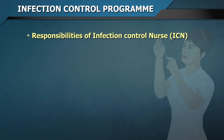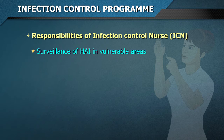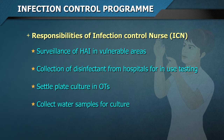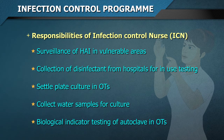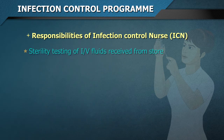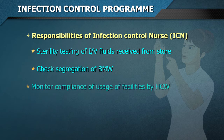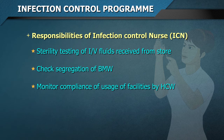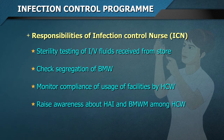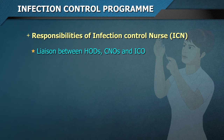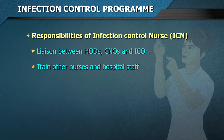Responsibilities of the infection control nurse (ICN): 1. Surveillance of HAI in vulnerable areas. 2. Collection of disinfectant from hospitals for in-use testing. 3. Settle plate culture in OTs. 4. Collect water samples for culture. 5. Biological indicator testing of autoclave and OTs. 6. Sterility testing of IV fluids received from store. 7. Check segregation of biomedical waste. 8. Monitor compliance of usage of facilities by healthcare workers. 9. Raise awareness about hospital acquired infections and biomedical waste management among healthcare workers. 10. Assist in the training program. 11. Liaison between HODs, CNOs and ICO. 12. Train other nurses and hospital staff.